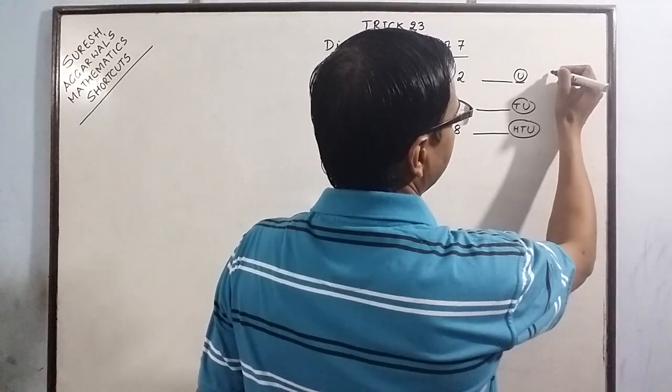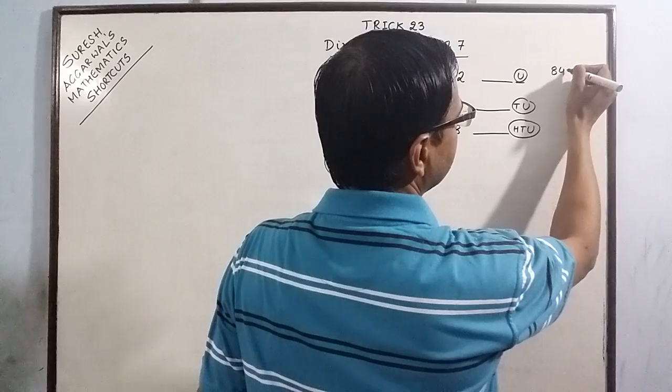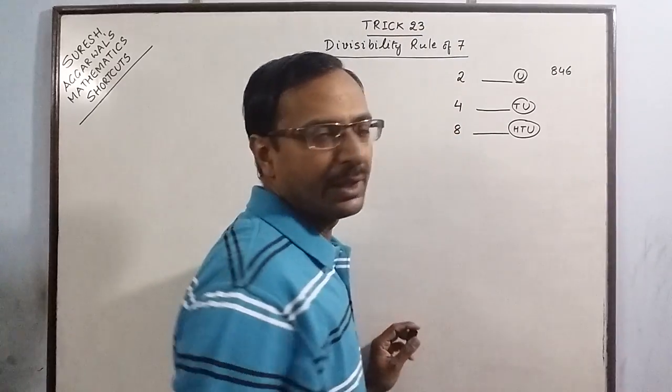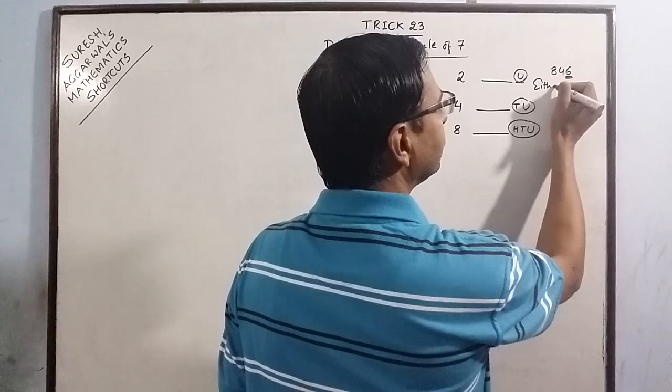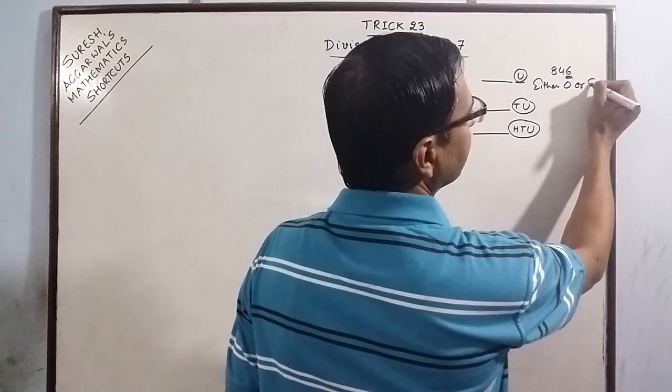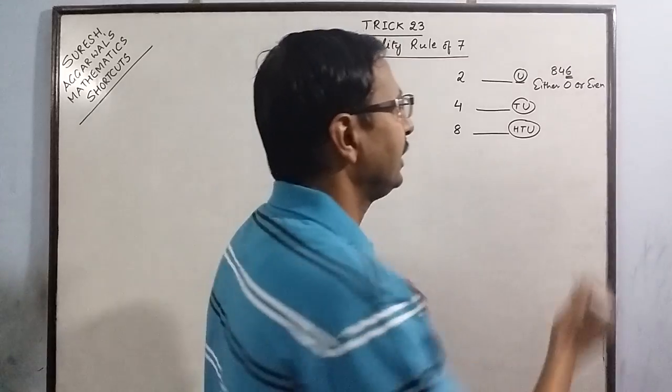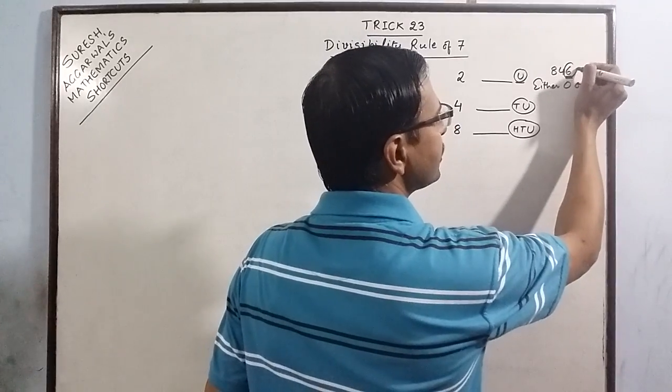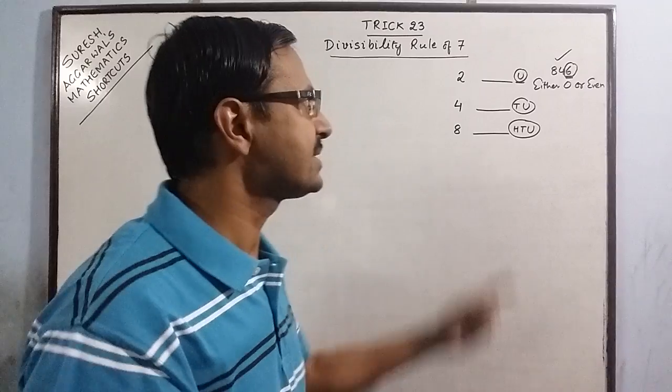Say for example, if we have a number say 846. Here the unit digit is either 0 or even 2, 4, 6, 8. Here it is 6, so the number is divisible by 2. We have to just see the units place.